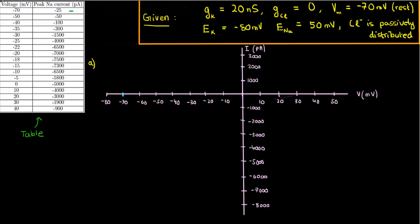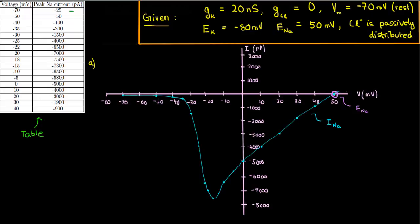We'll start with negative 70 millivolts and negative 25 picoamps, then negative 50 millivolts and negative 50 picoamps, and we'll keep going. Once we've plotted all the points, we can join them together to get a smooth curve — this is the IV curve for sodium. Note that this IV curve crosses the horizontal voltage axis at plus 50 millivolts, because that's the reversal potential, or the potential at which the sign of the sodium current changes from negative to positive.